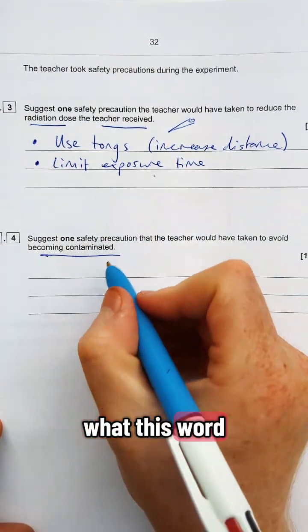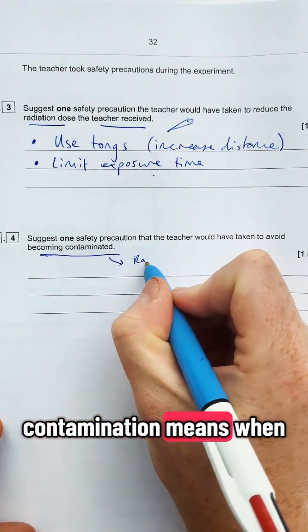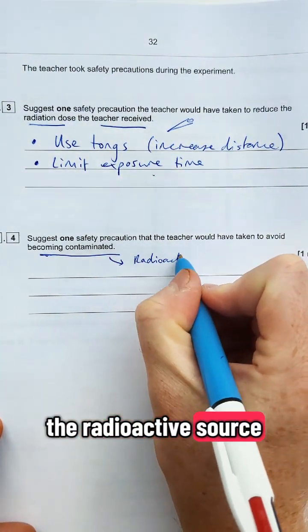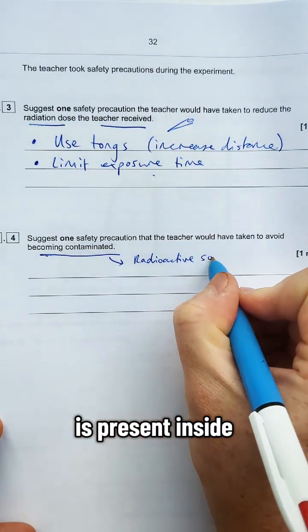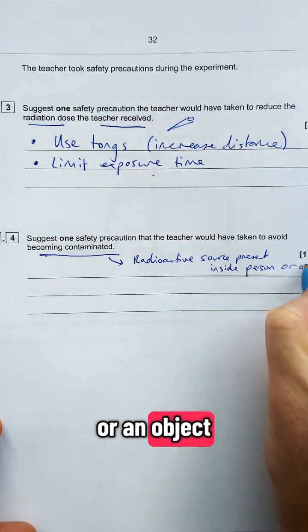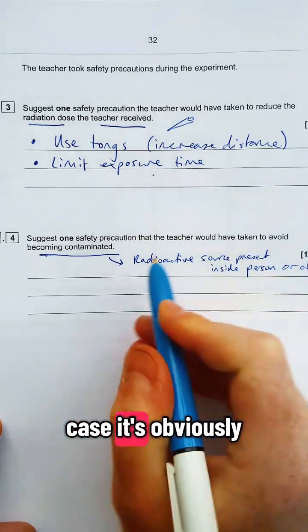Next one, we need to talk about what this word contaminated means. Contamination means when the radioactive source is present inside a person or an object. It doesn't have to be a person, but in this case, it's obviously a person.